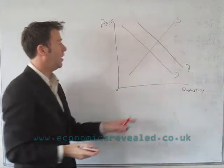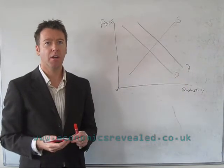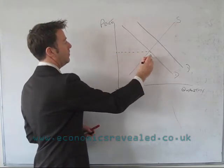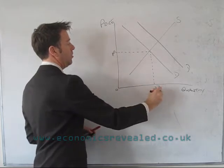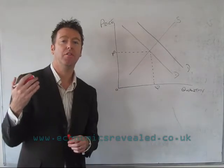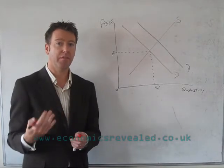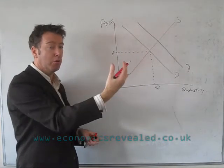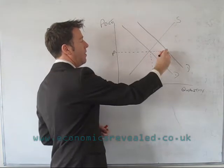We would normally draw it as D to D1, or you can do D1 to D2 — it doesn't matter too much. But what's happening is at this equilibrium price level P, this quantity was demanded. But if there's an increase in consumer income, population, or advertising, what can happen is that the demand curve shifts to the right, and you end up with an area of excess demand.